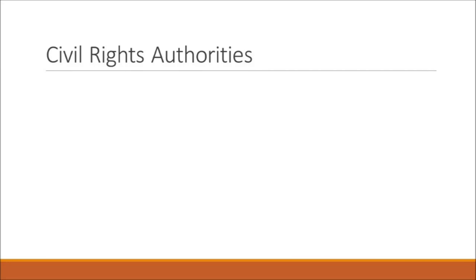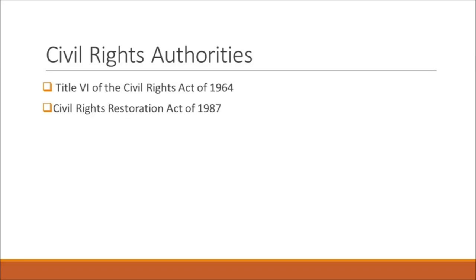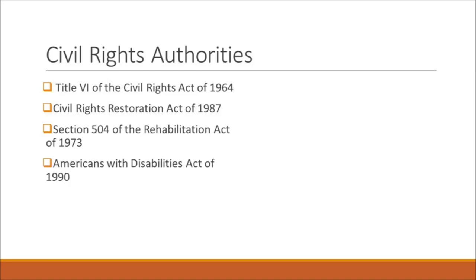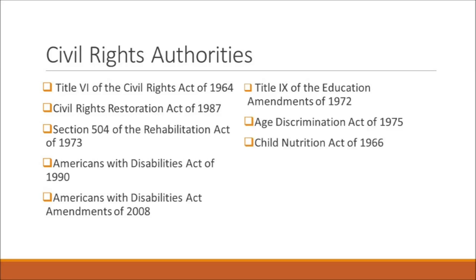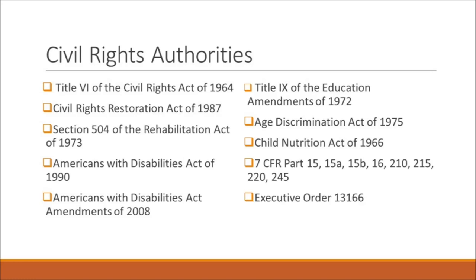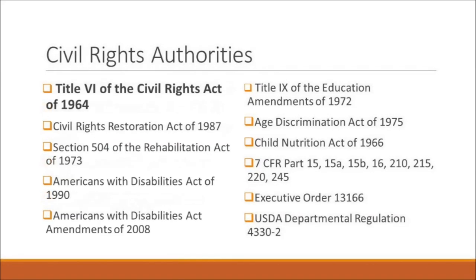The civil rights regulations followed in school nutrition programs come from several program authorities. Some of these include the Richard B. Russell National School Lunch Act of 1946, Title VI of the Civil Rights Act of 1964, Title IX of the Education Amendments of 1972, the Civil Rights Restoration Act of 1987, and the Americans with Disabilities Act of 1990, among many others. The grandfather of the legislation is really considered to be Title VI of the Civil Rights Act of 1964.